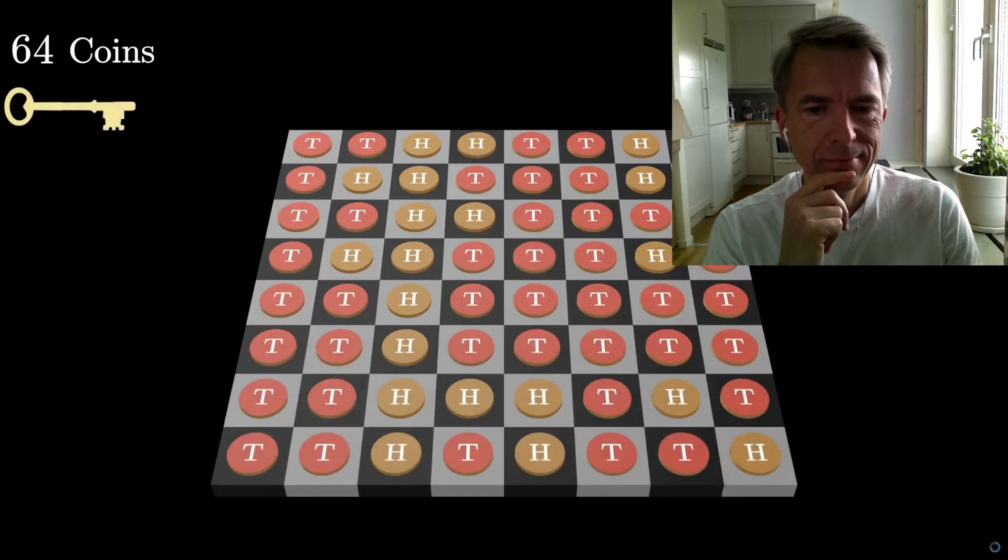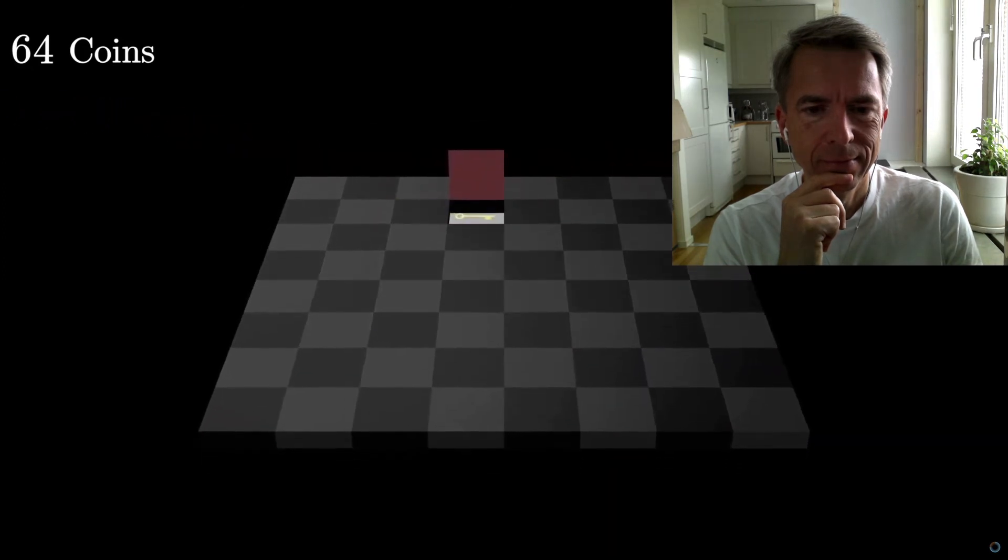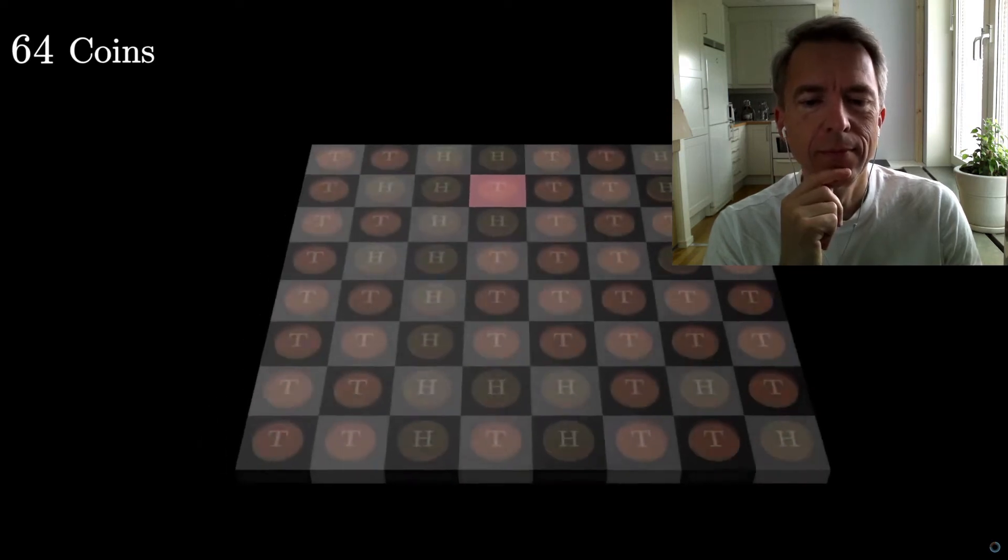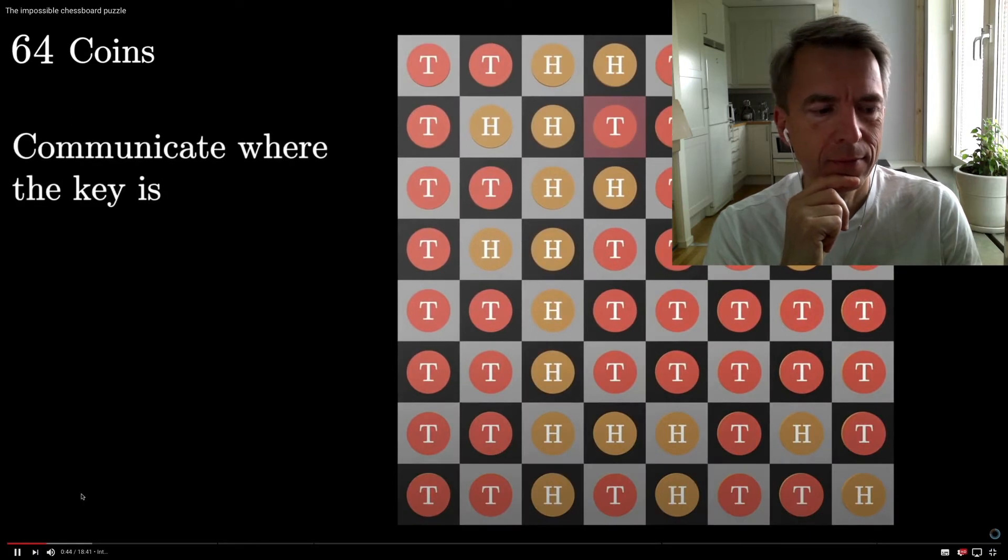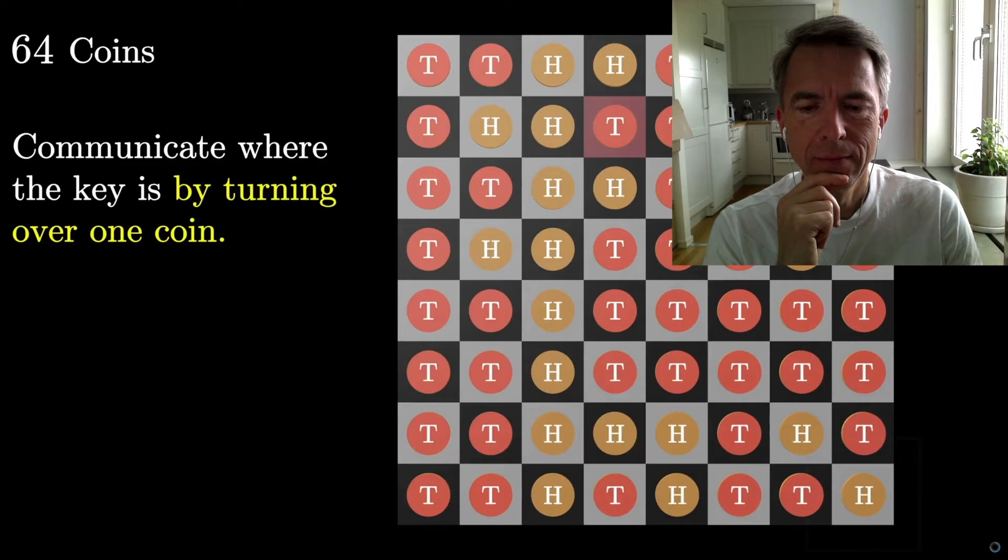And then they show you a key. They put that key inside one of the chessboard squares. Each square is a secret compartment or something like that. So you know where the key is. And the goal is going to be to get prisoner number two to also know where the key is. But the only thing that the warden allows you to do before you leave the room is to turn over one and only one of these coins.